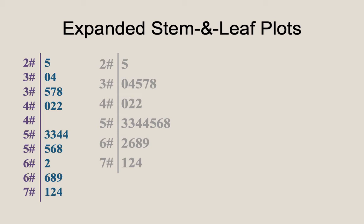However, note that the empty row for the second four should not be skipped. Even though there are no data values from 45 to 49 in this data set, we need to include this gap in the stem-and-leaf plot to preserve the shape of the distribution of the data.